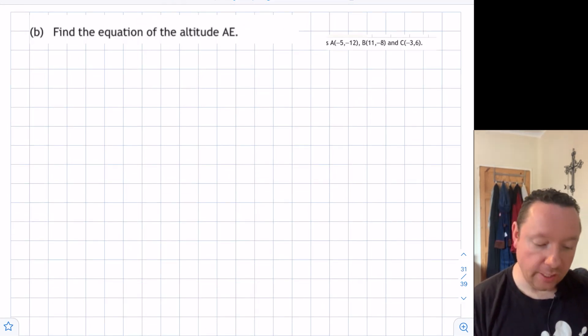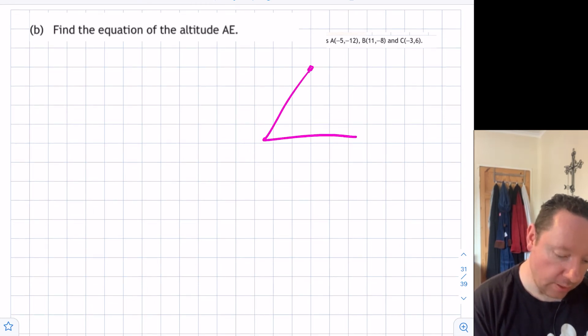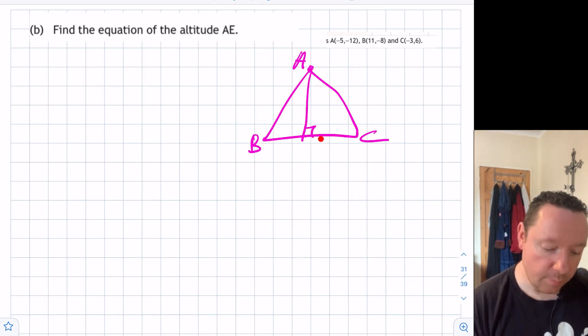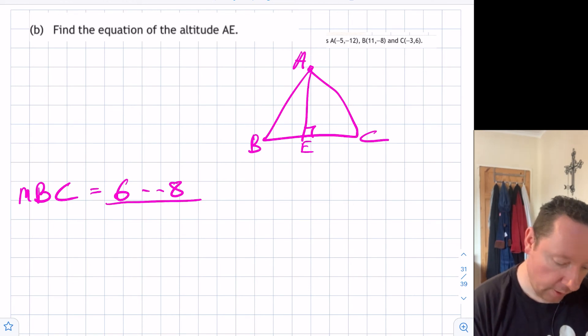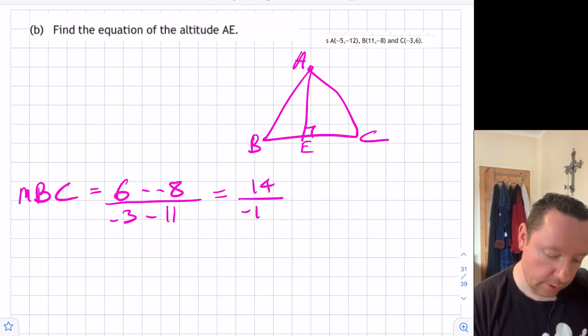Part B says find the equation of the altitude from A. Drawing a little sketch, I just want to get A, B, and C here. I'm realizing that if I draw that down, it is the gradient of BC I need to find the perpendicular of for the altitude. Starting with the gradient of B to C, that equals 6 minus -8 all over -3 minus 11. 6 add 8 is 14, -3 take away 11 is -14. So that's -1. Therefore the gradient of AE is equal to just 1, since m1 times m2 equals -1.